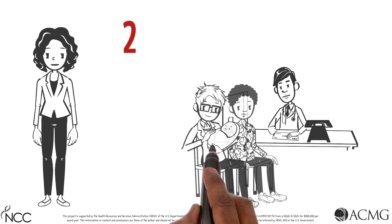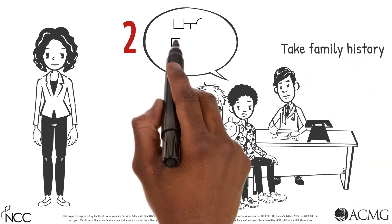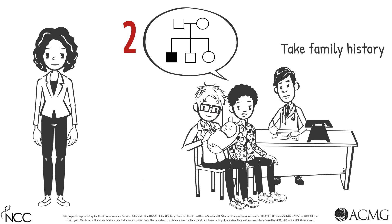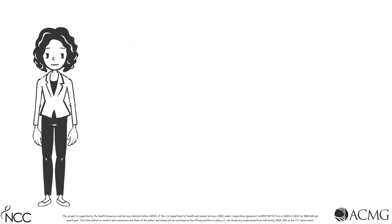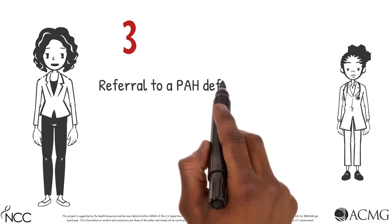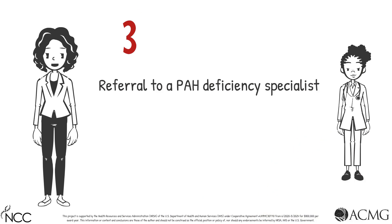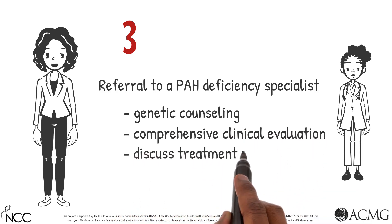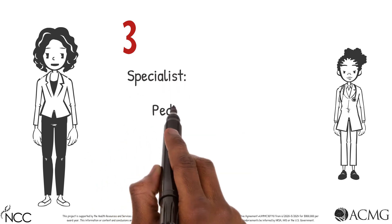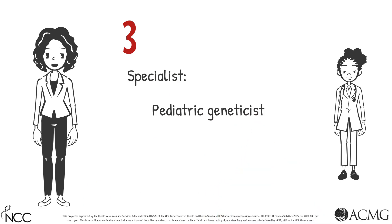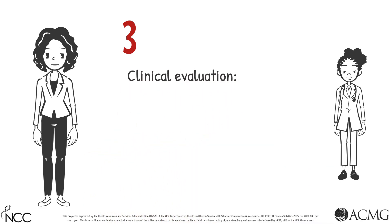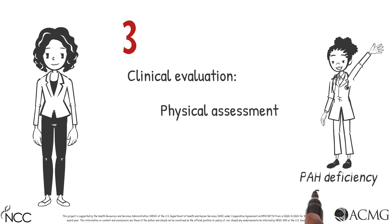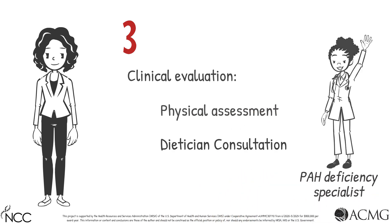Second, take a family history. Because PAH deficiency is inherited in an autosomal recessive manner, it is common for there to be no known family history of PAH deficiency. Third, arrange for a referral to a PAH deficiency specialist for genetic counseling, a comprehensive clinical evaluation, and discussion of a treatment plan, including management of breastfeeding and formula administration. The specialist is typically a pediatric geneticist, and the clinical evaluation should include a comprehensive physical assessment and a consultation with a dietician.